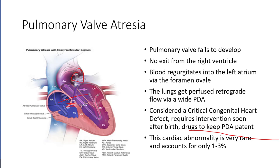So pulmonary valve atresia: the pulmonary valve fails to develop, there's no exit from the right ventricle, so it keeps filling. Blood regurgitates into the left atrium, giving some mixing, and the lungs get perfused through retrograde perfusion from the PDA. It's a critical condition — the child needs surgery immediately, and they're usually given drugs to keep the patent ductus arteriosus open or the child won't survive.